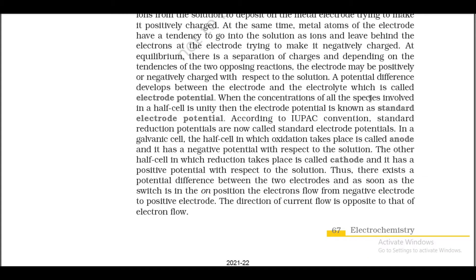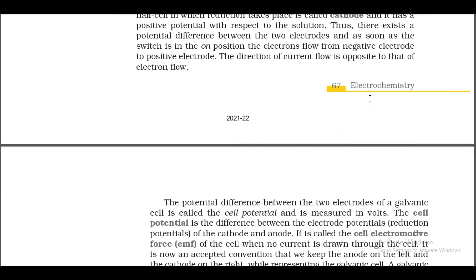When the switch is on, electrons flow from the negative electrode to the positive electrode; the direction of current flow is opposite to that of electron flow. The potential difference between the two electrodes of a galvanic cell is called the cell potential, measured in volts. It is the difference between the electrode reduction potentials of the cathode and anode, and is called the cell electromotive force (EMF) when no current is drawn.